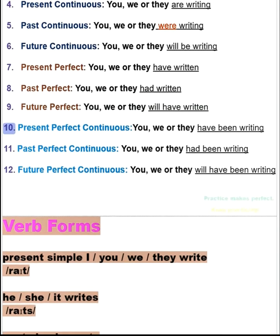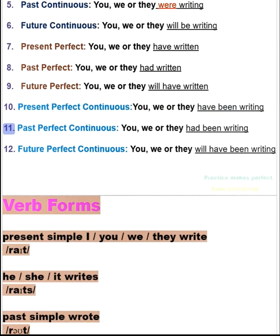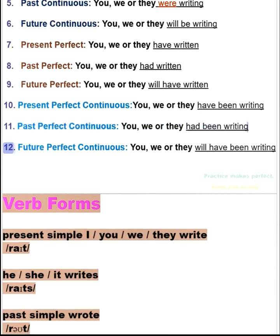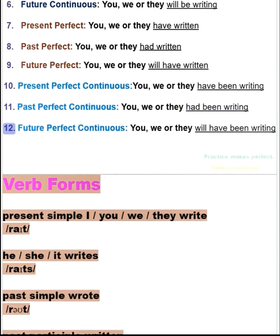10. Present perfect continuous: you, we or they have been writing. 11. Past perfect continuous: you, we or they had been writing. 12. Future perfect continuous: you, we or they will have been writing.